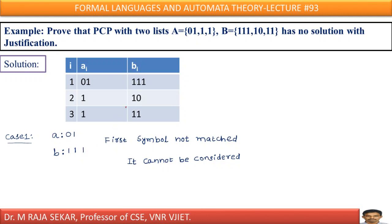Welcome to Rajashekar classes on formal languages and automata theory. This is lecture number 93. Prove that PCP — Post Correspondence Problem — with two lists A equal to {01, 1, 1} and B equal to {111, 10, 11} has no solution, with justification.